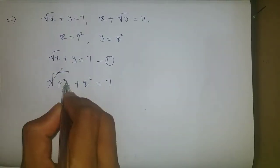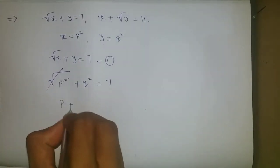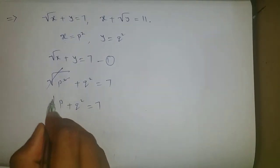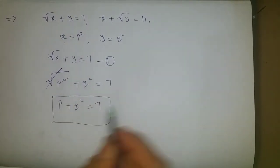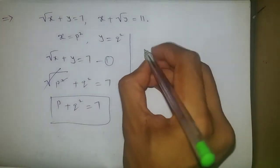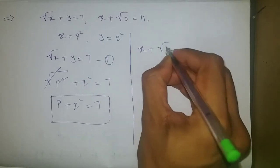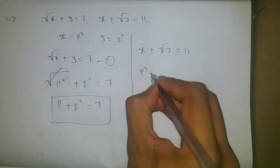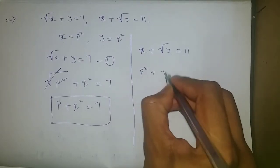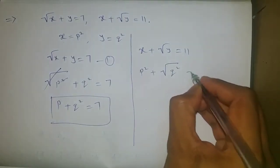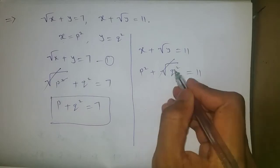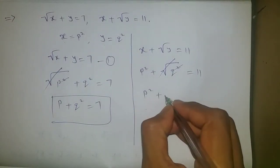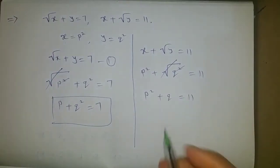Here the square root and square cancel, so we remain with p + q² = 7. Now for the second equation, x + root(y) = 11: substituting gives p² + root(q²) = 11. Here again square and square root cancel, so we remain with p² + q = 11.